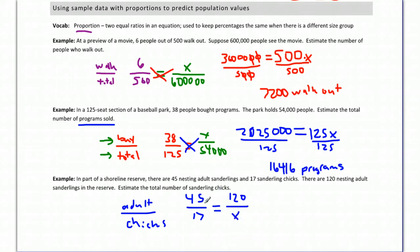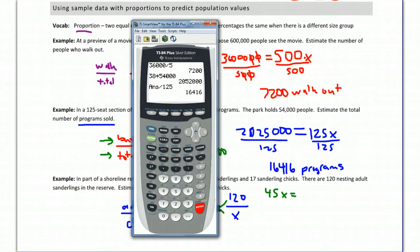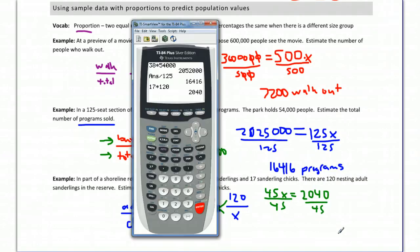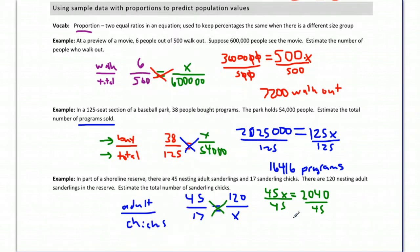If I wrote 17 over 45 equals x over 120, that would be okay. But I decided just to show it a different way than this one. So we do our cross multiply step first thing. So we have 45x equals 17 times 120. 17 times 120, and that's going to be 2,040. Of course we're trying to get x by itself so we can figure out how many chicks there are. So we divide by 45.